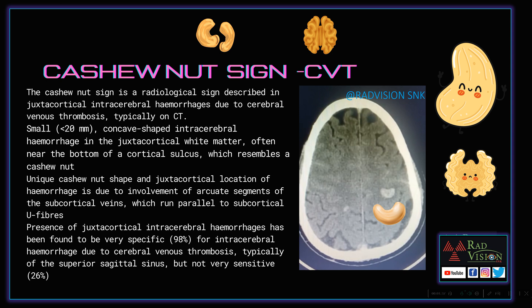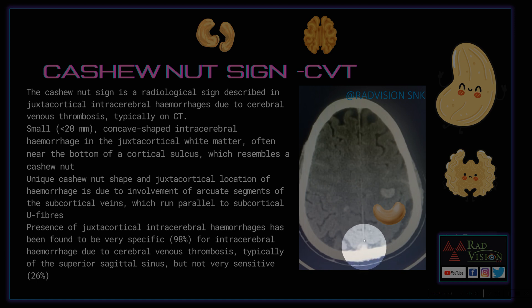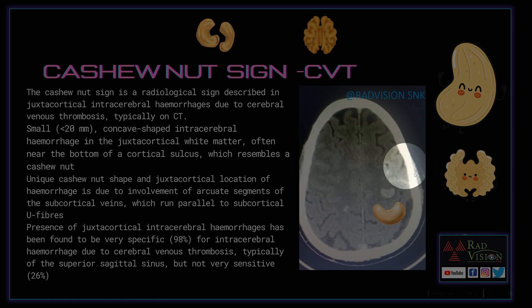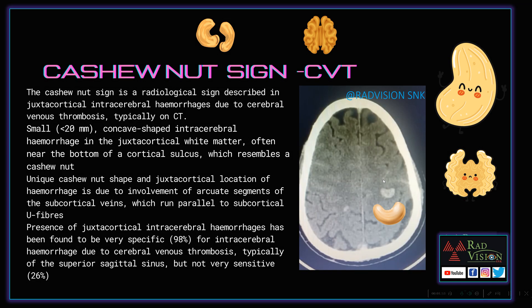Whenever you see these cashew nut-shaped hemorrhages, it is highly specific — 98% specific — for intracerebral hemorrhage due to cerebral venous thrombosis. In this case you can see a hyperdense subcortical sinus with thrombosis, and there are hemorrhages in the right parietal lobe with minimal SAH. Remember the cashew nut sign in cerebral hemorrhages in the juxtacortical white matter due to cerebral venous thrombosis.